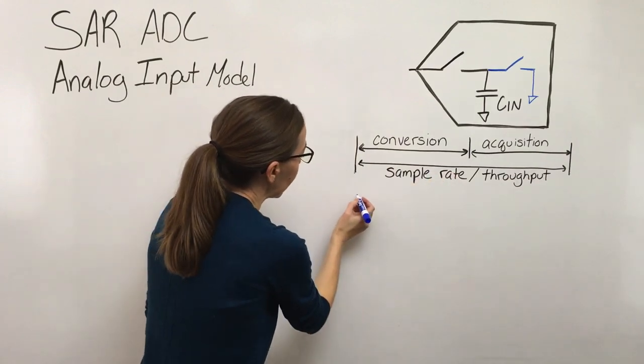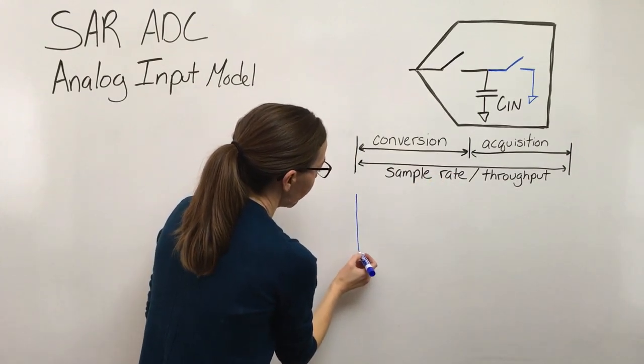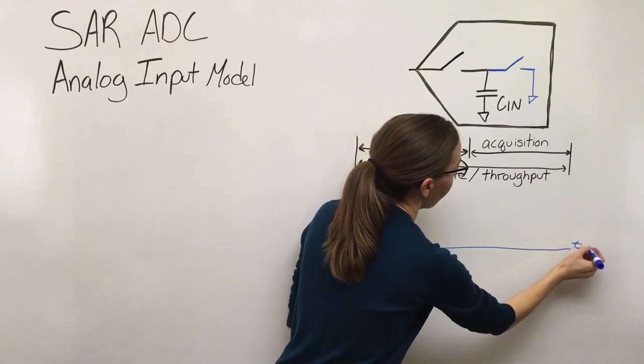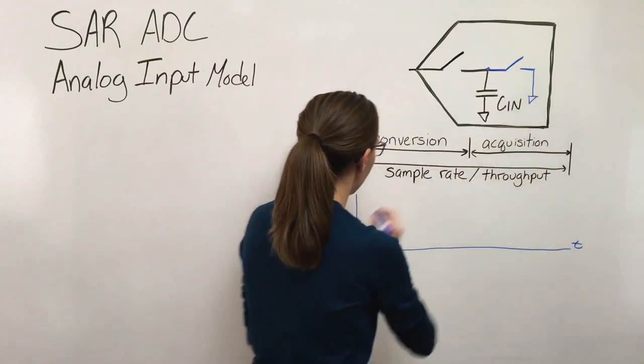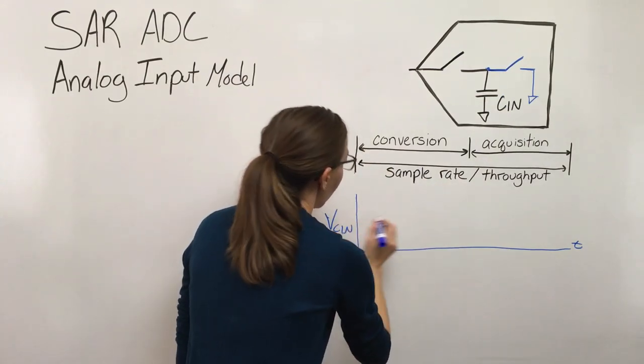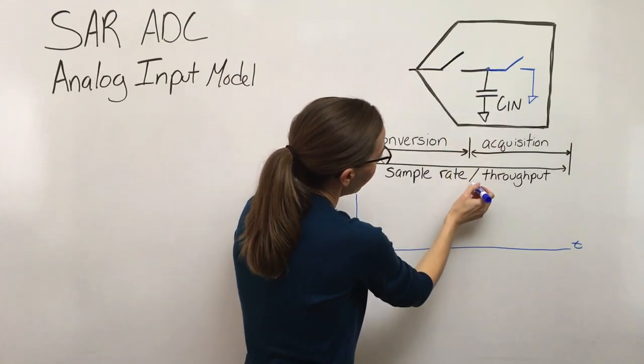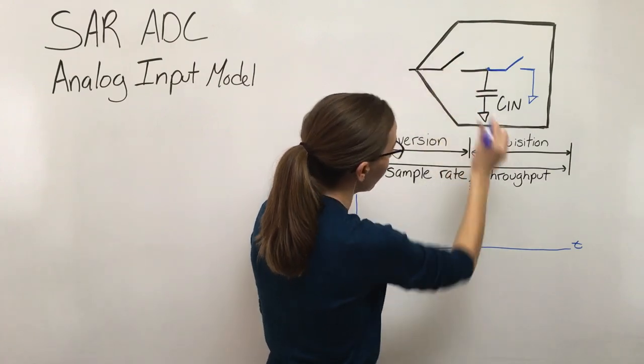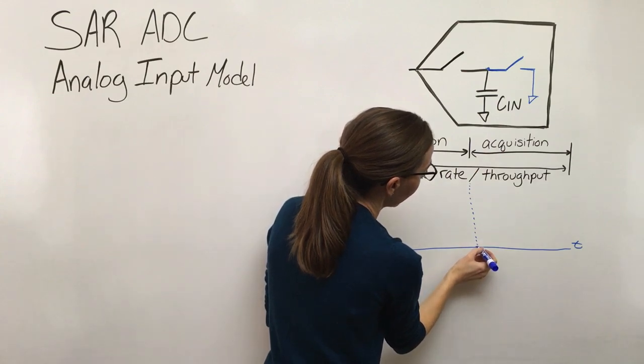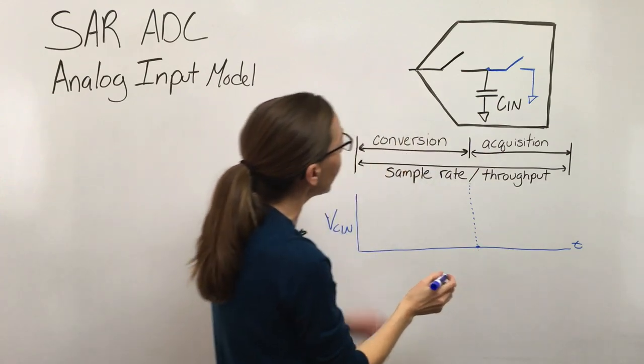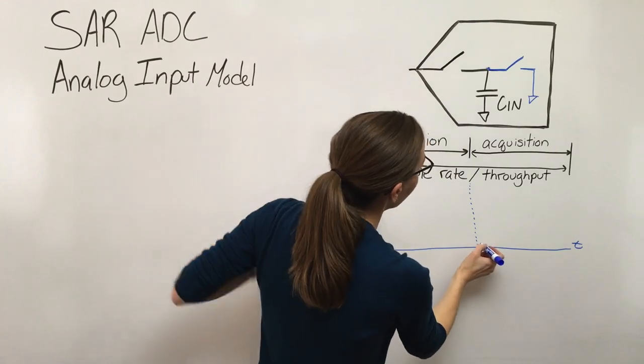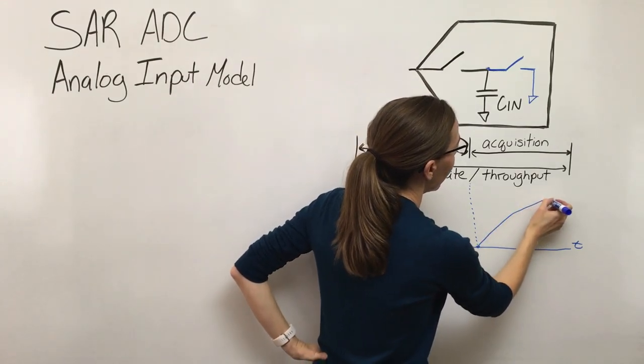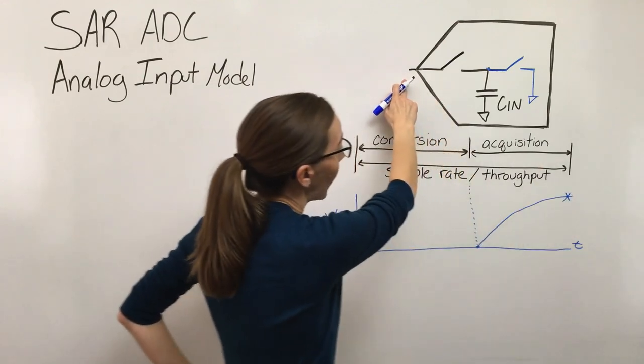What that means is if we were to look at the voltage on that sample cap right here, at this point in time where it switches from conversion to acquisition and the switch closes, this is going to be sitting at zero volts. Then when the switch closes, this voltage on the sample cap is going to start to settle at whatever voltage we're trying to drive at